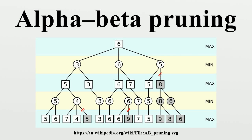Alpha-beta pruning is a search algorithm that seeks to decrease the number of nodes that are evaluated by the Minimax algorithm in its search tree. It is an adversarial search algorithm used commonly for machine playing of two-player games. It stops completely evaluating a move when at least one possibility has been found that proves the move to be worse than a previously examined move. Such moves need not be evaluated further. When applied to a standard Minimax tree, it returns the same move as Minimax would, but prunes away branches that cannot possibly influence the final decision.